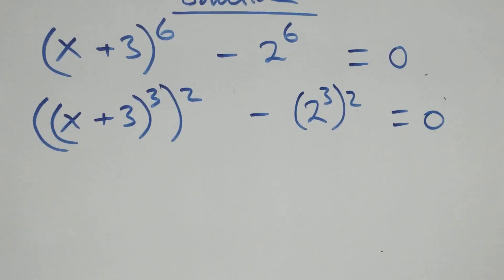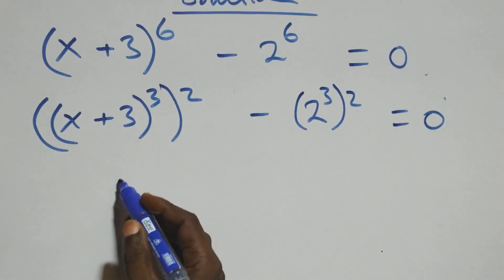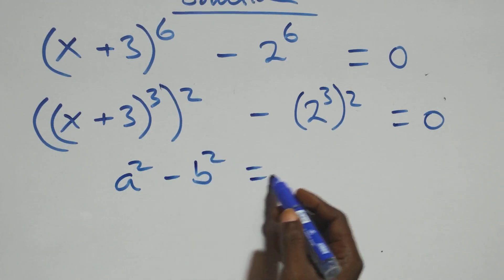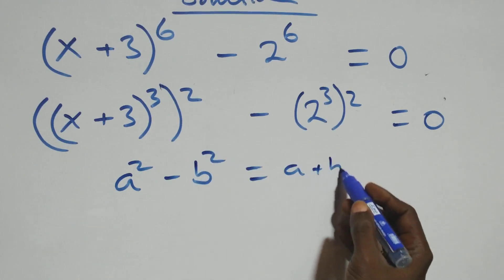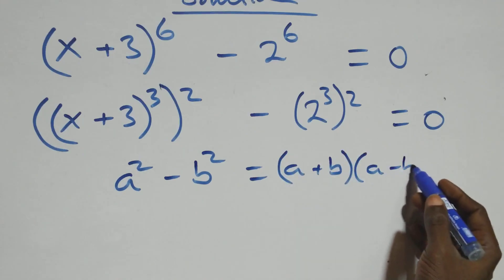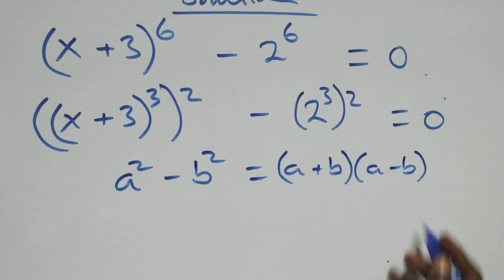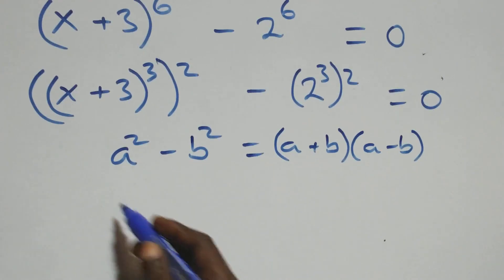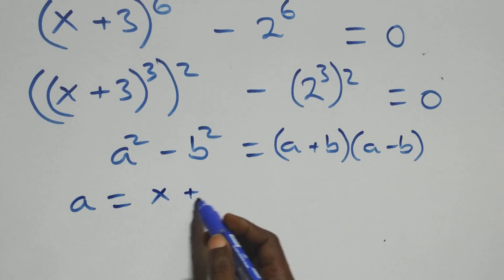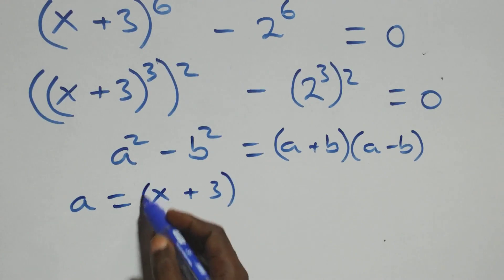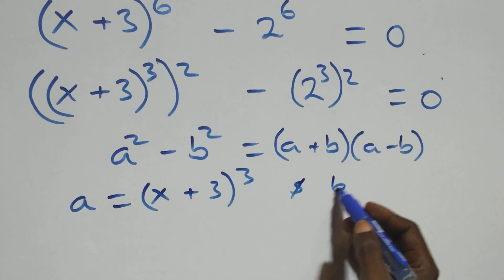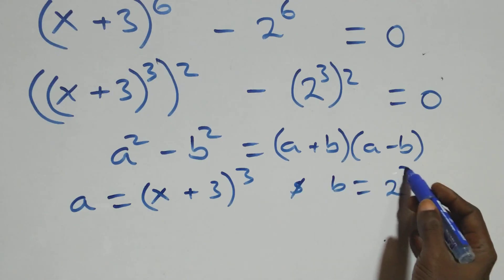This follows when we have a squared minus b squared, which is the same thing as (a plus b) into bracket, open bracket, (a minus b). That is: a standing as x plus 3 all raised to the power 3, then b standing as 2 raised to the power 3.